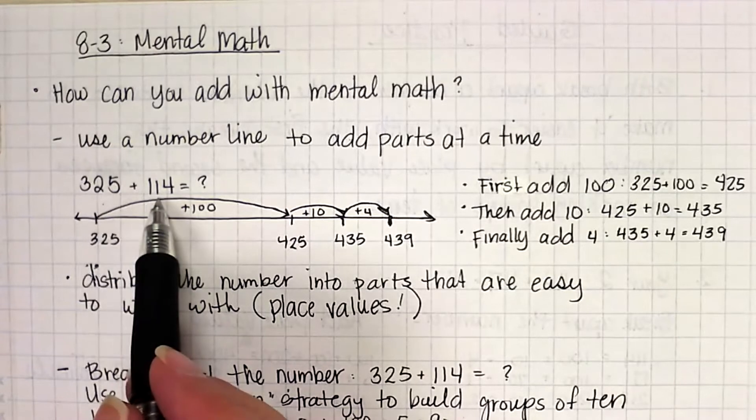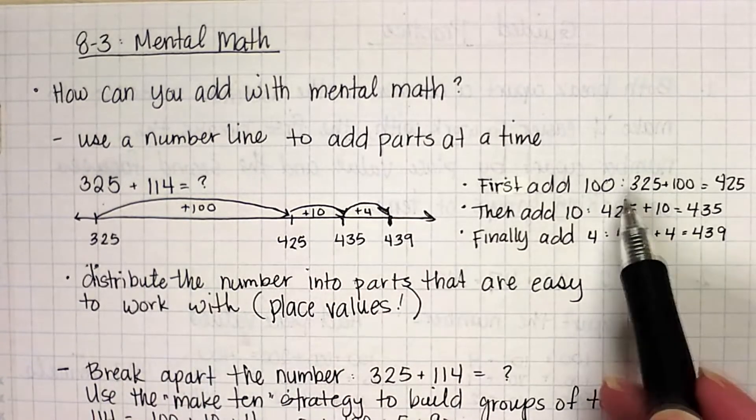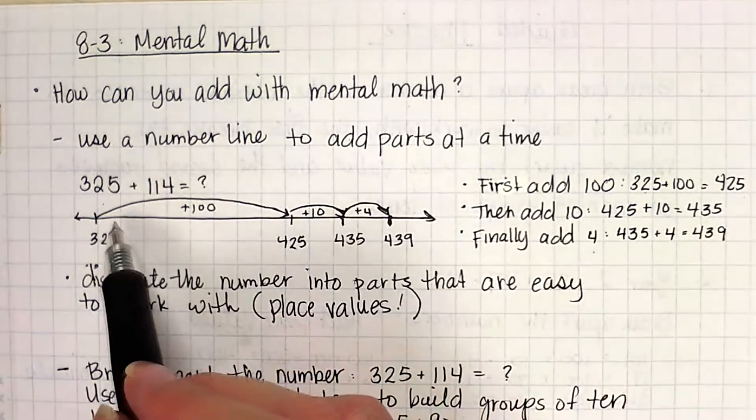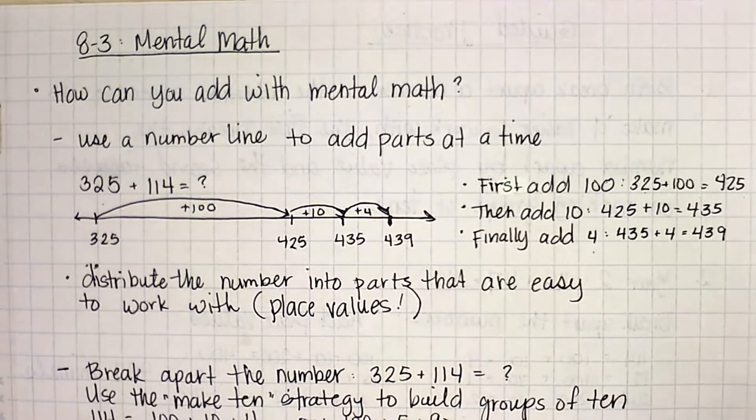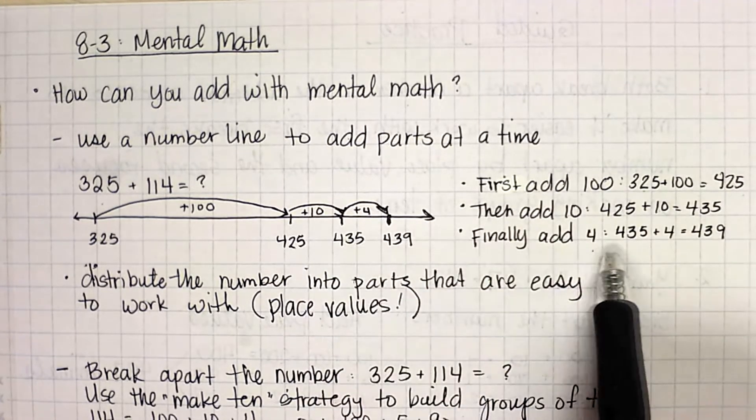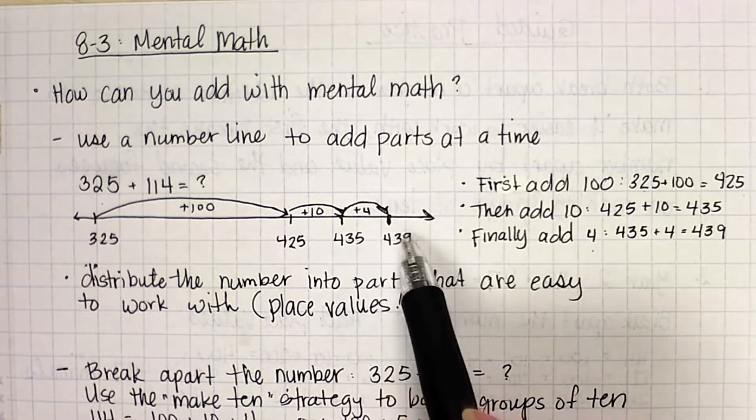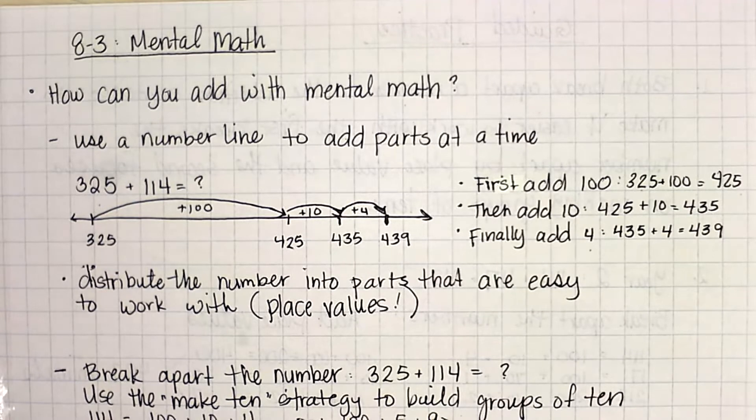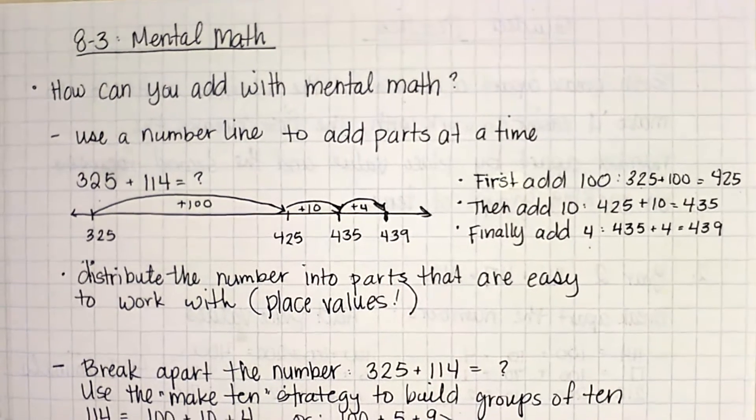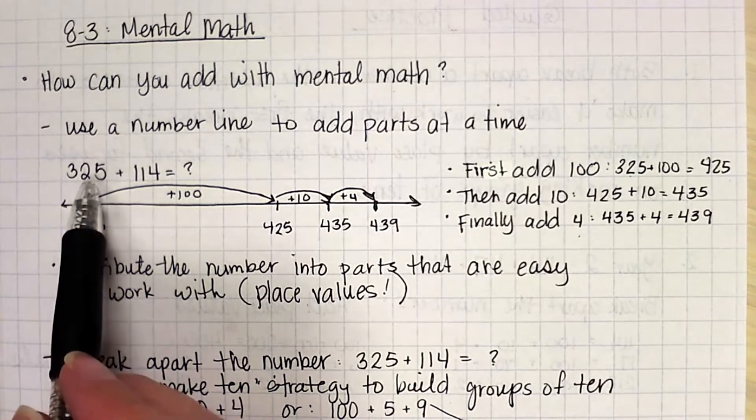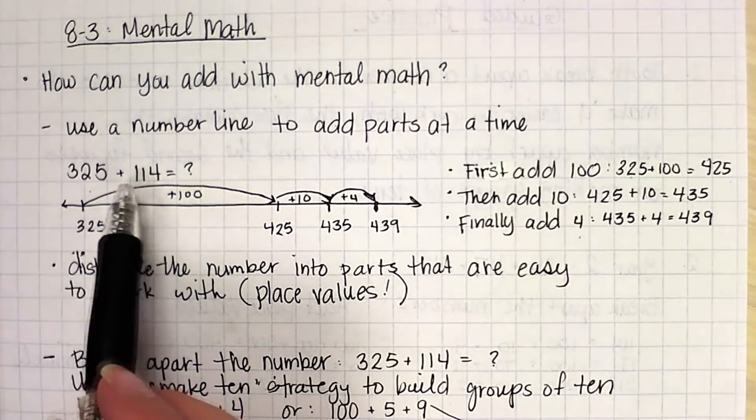So we have 325 plus 114. We're going to break the 114 into 100, 10, and 4. So first, we added the 100. So 325 plus 100 gave us 425. So you can see that jump that we made right there. Then we added 10. So we added the 100s group. Now we're adding the 10s group. 425 plus 10 is 435, and then plus the remaining ones, which was a 4, 435 plus 4 got us to 439. So you're distributing this number into its parts that are easy to work with. So you're writing the number in expanded form, essentially. So you're breaking it into individual place values. Remember, expanded form has each place value separated. So 325 in expanded form would be 300 plus 20 plus 5. 114 in expanded form is 100 plus 10 plus 4.